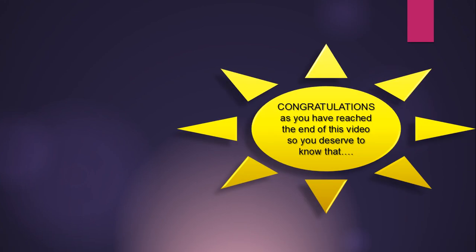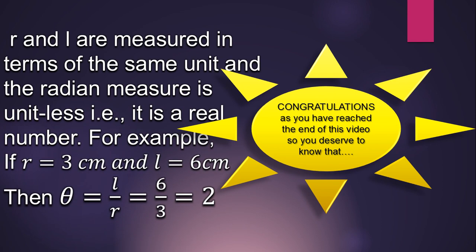Okay, congratulations! As you have reached the end of this video, you deserve to know that R and L are measured in terms of the same unit and the radian measure is unitless, that is, it is a real number. For example, if R equals 3 cm and L equals 6 cm, then theta equals 6 by 3 equals 2, unitless.